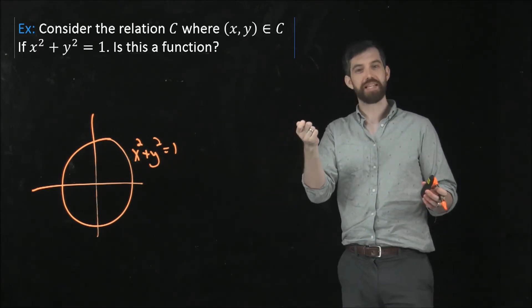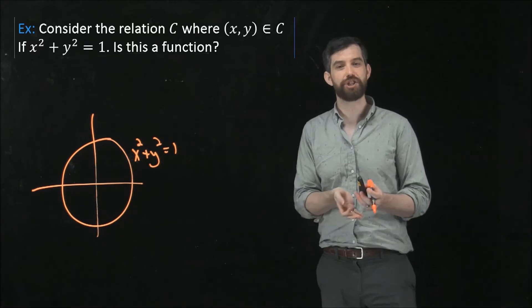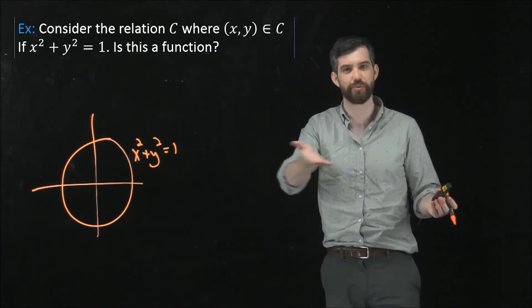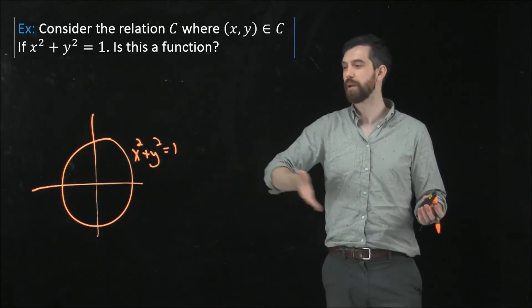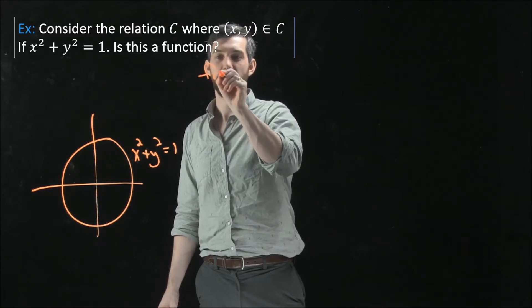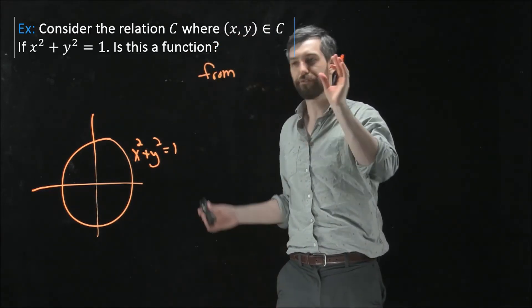But the first point is the less interesting of the two because perhaps I could choose that my set of input values was not the entire real line. It was just some subset. So how about this? I have this, is this a function? And I'm going to make a qualification. Is this a function from, and then I'm going to write this interval,